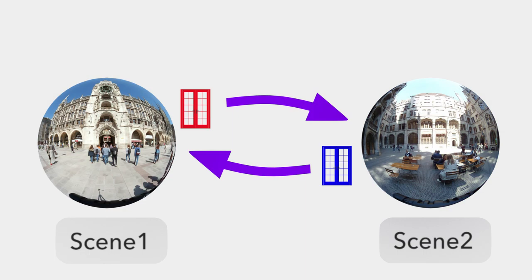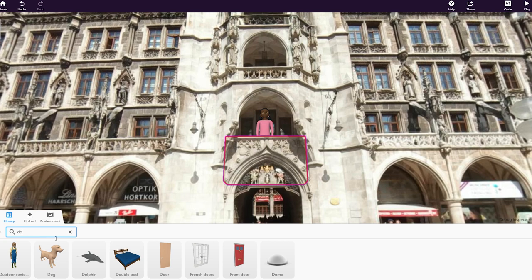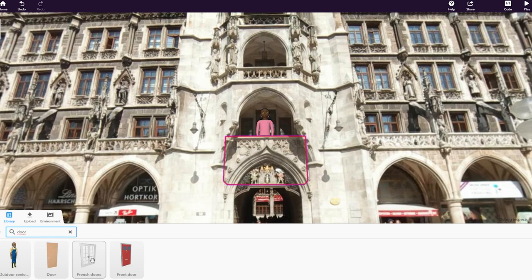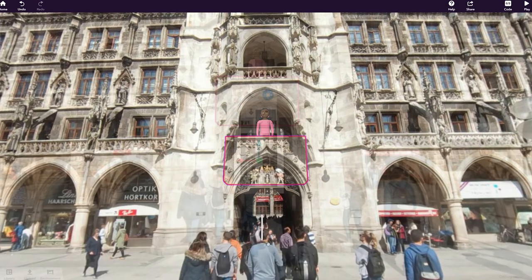Let's now add code to let the viewer go through the virtual tour by switching scenes. In each scene, you'll need objects that can be clicked to go to a different scene. For example, let's place this door in front of the entrance to go to the next scene.